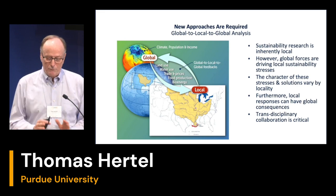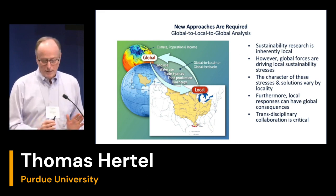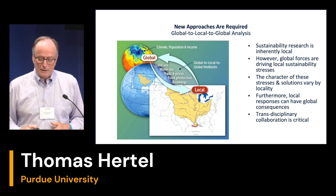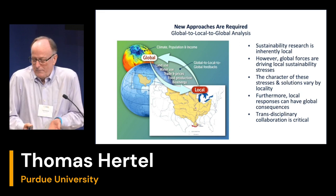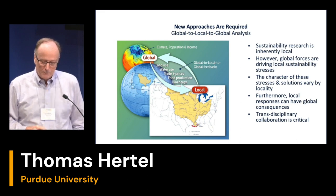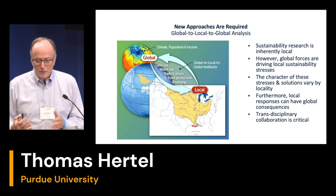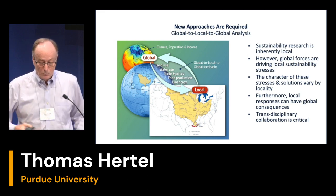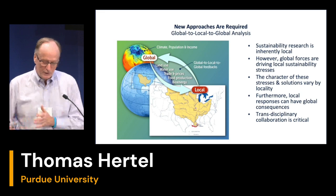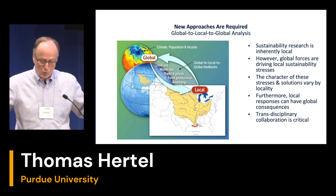The overall theme of the Simple-G framework and our piece of iGUIDE is global-to-local-to-global analysis. The idea is you need a multi-scale approach. All these sustainability issues are inherently local — they depend on local soils, local community governance, water, and climate. You can't address sustainability without becoming local, but if you ignore the global context, that community could go off in a direction that wouldn't be feasible in the future. And we've found there's feedback from local sustainability solutions back to the regional and global context.